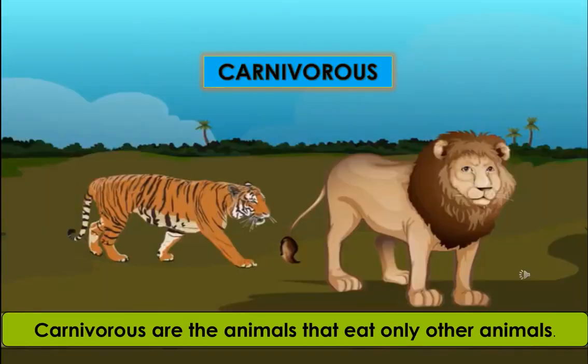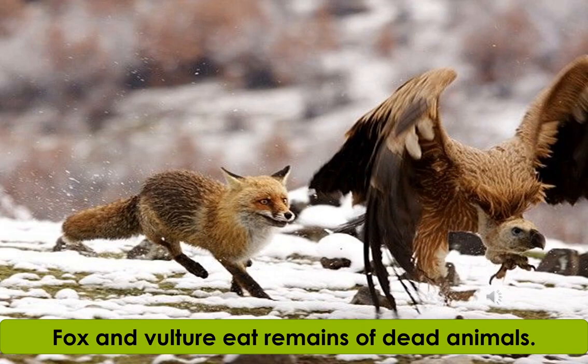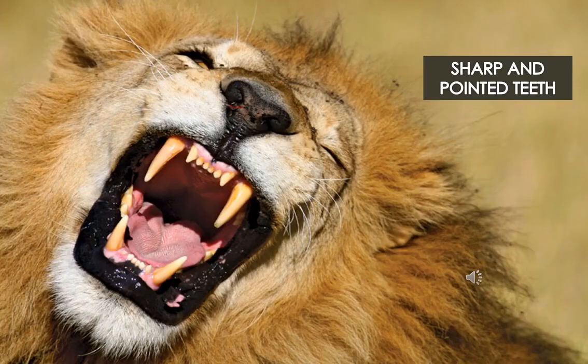Carnivores are the second type of animals based on their eating habits. They hunt other animals and eat their flesh. Some carnivores like fox and vulture eat the remains of dead animals. Carnivores eat flesh of other animals, so they have sharp and pointed teeth to tear the flesh. Their back teeth are strong to chew flesh and bones.